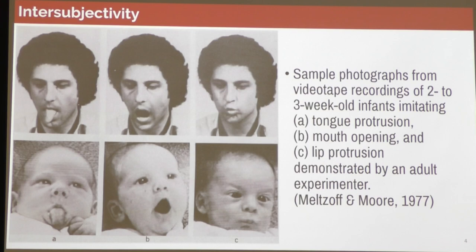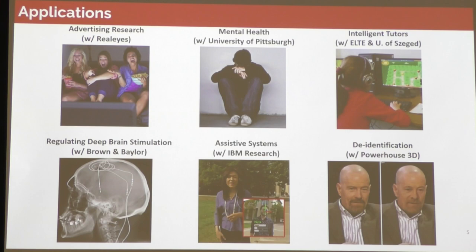What kind of applications could we use if we grant a machine these capabilities? One of them is advertising research — when companies want to understand if they are emotionally engaging their consumers with their advertisements. Another big application domain is mental health — quantifying mental health.